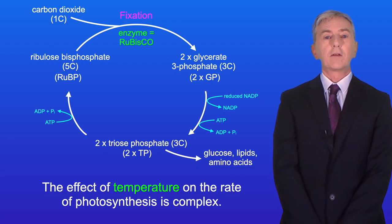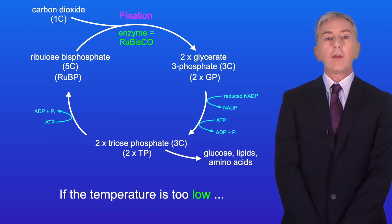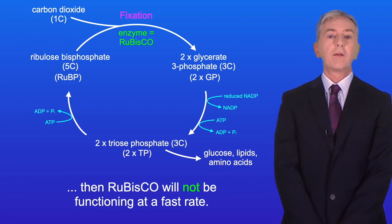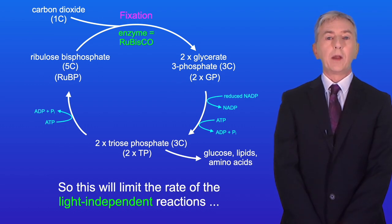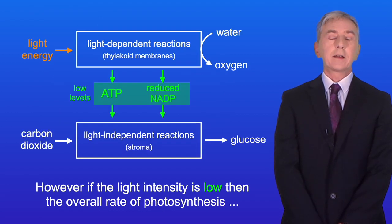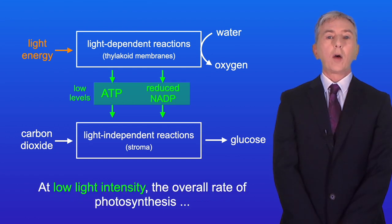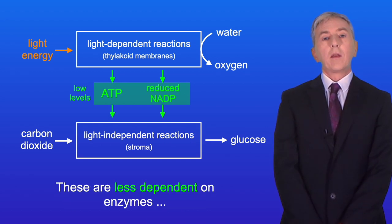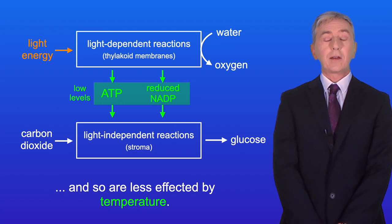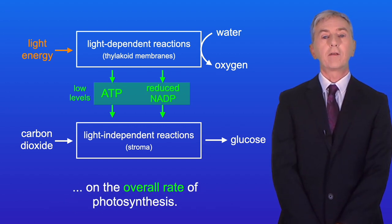The effect of temperature on the rate of photosynthesis is complex. A key enzyme in the Calvin cycle is rubisco, which catalyzes the fixation of carbon dioxide. If the temperature is too low, rubisco will not function at a fast rate, limiting the light-independent reactions and the overall rate of photosynthesis. However, at low light intensity, the overall rate is limited by the light-dependent reactions, which are less dependent on enzymes and so are less affected by temperature — meaning temperature has less of an effect on overall photosynthesis rate at low light intensity.